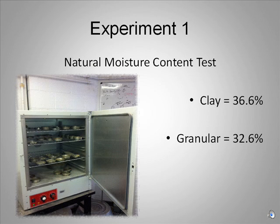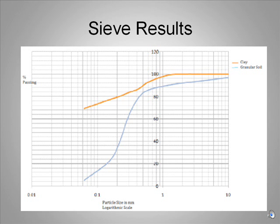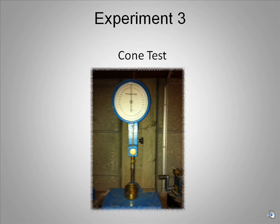The experiments we carried out are as follows. The clay soil had a natural moisture content of 36.6%. The granular soil had a natural moisture content of 32.6%. Using the sieve test, plasticity limits test and liquid limits test, we discovered from the sieve test that the clay had a fines content of 70%. The activity of the soil was 0.28%, from which we determined that muscovite was the primary mineral. The liquid index of the soil was 0.4155, indicating it was in a plastic state.